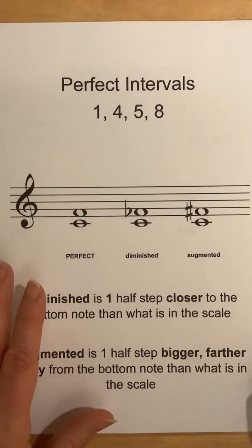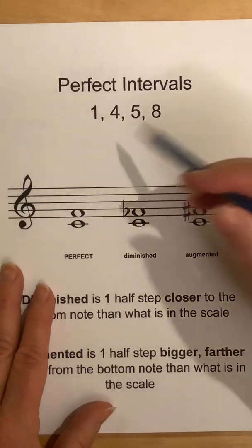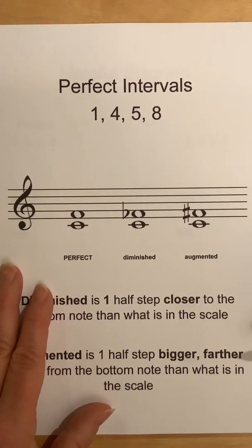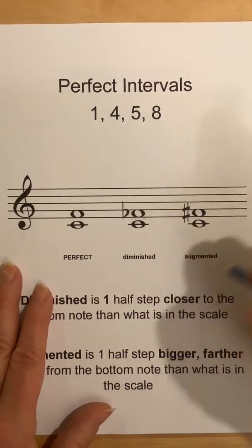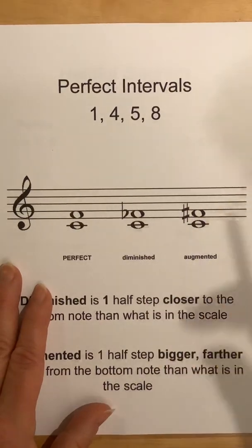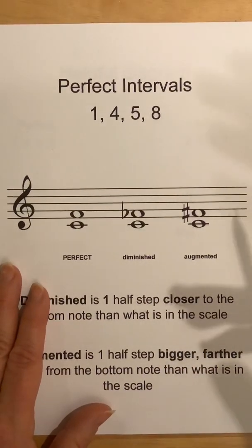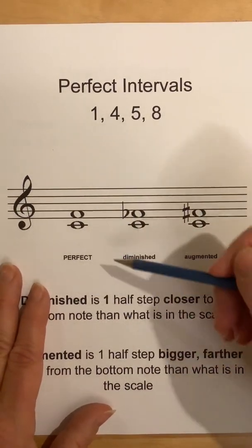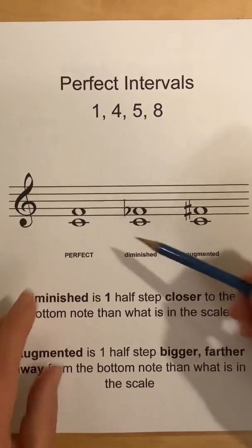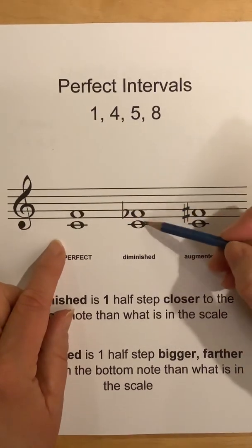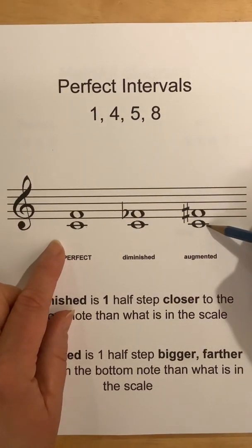Our perfect intervals are 1, 4, 5, and 8. And this time there are only three types — there are no minor perfect intervals. There's no such thing as a minor perfect. You can't have a minor fourth or a major fourth. You can have a perfect fourth, a diminished fourth, or an augmented fourth.